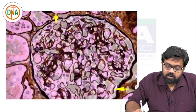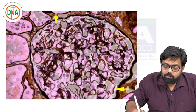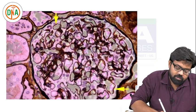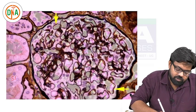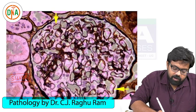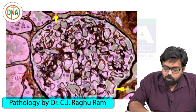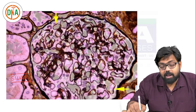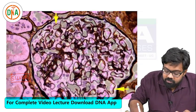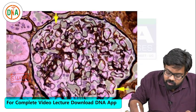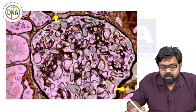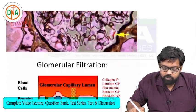Another special stain helpful to identify the membrane is the silver stain. As you know, silver stain gives a black colored appearance of the membrane. All the capillaries are having this black lining - it is nothing but the basement membrane. It is very clear here. So this is another special stain we use.